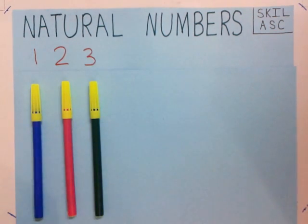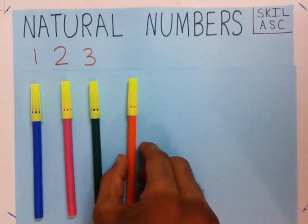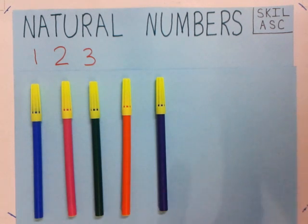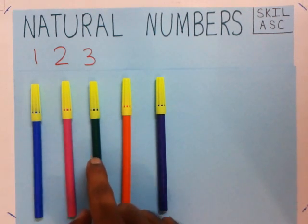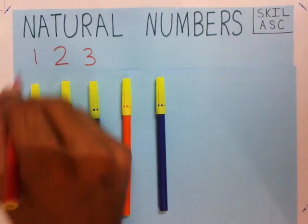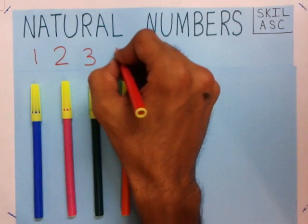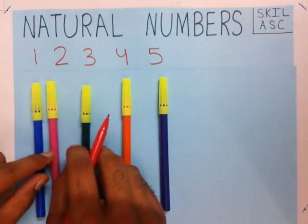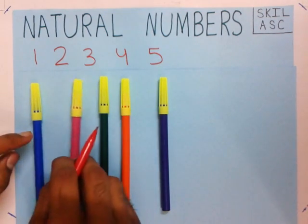Now if I put two more colors here, how many colors can you see? You can see five colors. How do you know this? You count the number of colors again as 1, 2, 3, 4, 5. So we write these numbers as 1, 2, 3, 4, and 5.